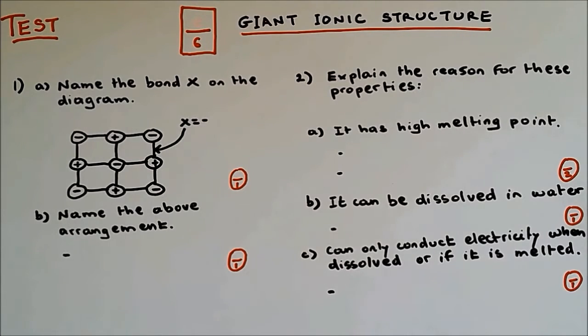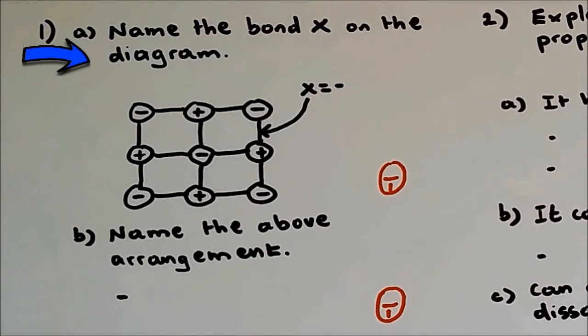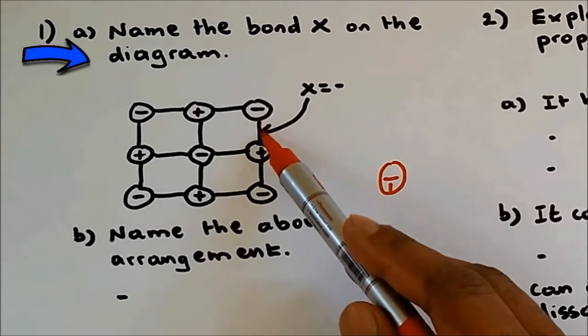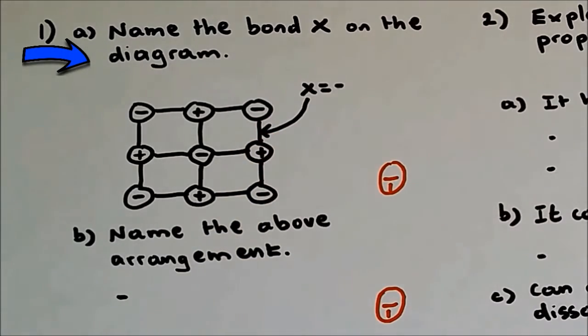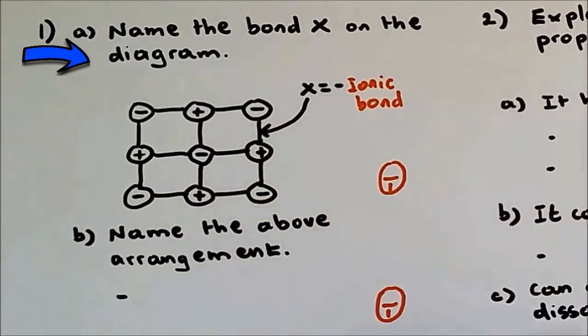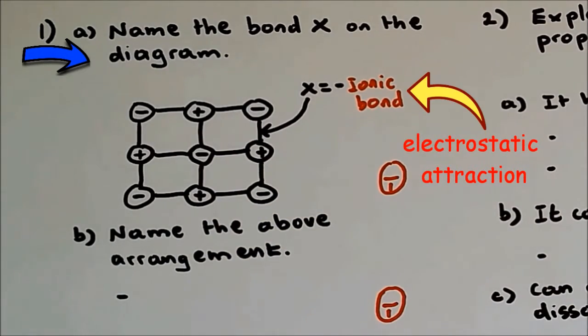So if you're ready, let's do this. Question 1a: Name the bond X on the diagram. You can see that the bond over here is holding the positive and the negative ions together, so such bond has to be ionic bonding. A different name for ionic bonding is electrostatic attraction, which is involved in opposite charge ions.